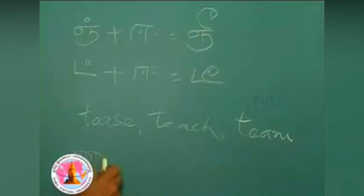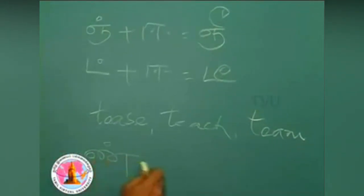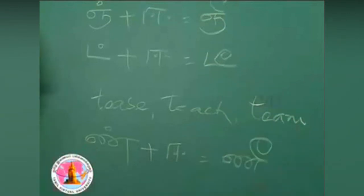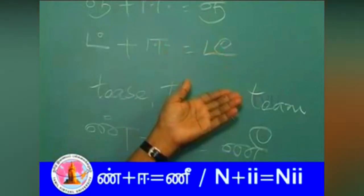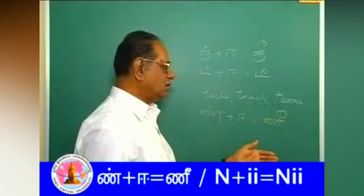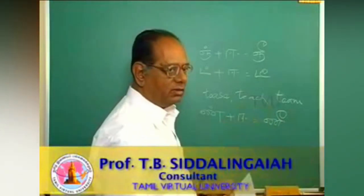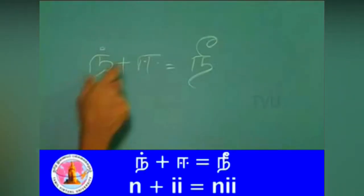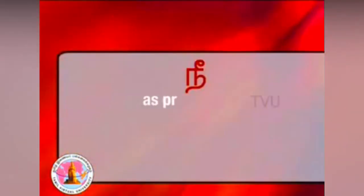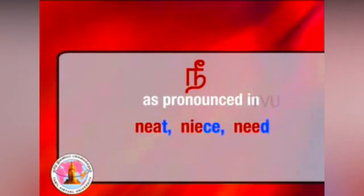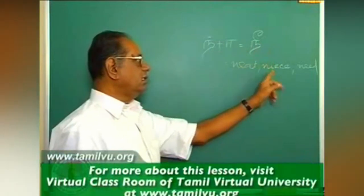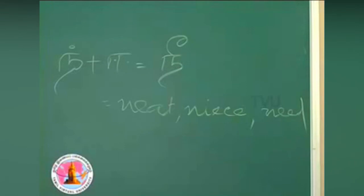Next letter is the nasal one, n, plus ee, it becomes ni. Generally, I avoid giving you any example from the English language, since the nasals are pronounced differently here, and the pronunciation of the same in English is different. In plus ee, ni, is in plus ee, ni, as in need, knees, and need.